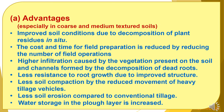Advantages of minimum tillage, especially in coarse and medium textured soils. First, improved soil conditions due to decomposition of plant residue in situ. Second, the cost and time for field preparation is reduced by reducing the number of field operations. Third, higher infiltration caused by the vegetation present on the soil and channels formed by the decomposition of dead roots. Fourth, less resistance to root growth due to improved structure. Fifth, less soil compaction by the reduced movement of heavy tillage vehicles. Sixth, less soil erosion compared to conventional tillage. Seventh, water storage in the plough layer is increased.